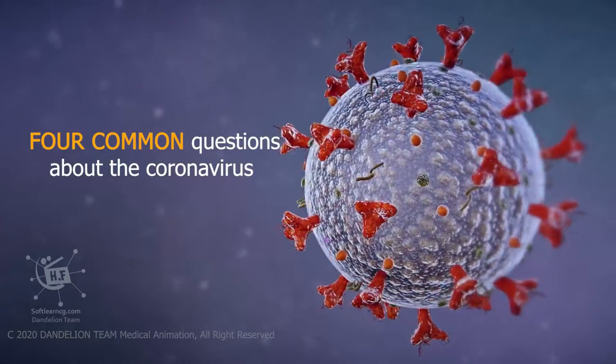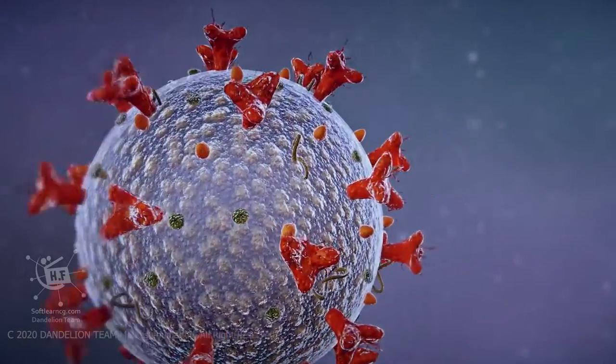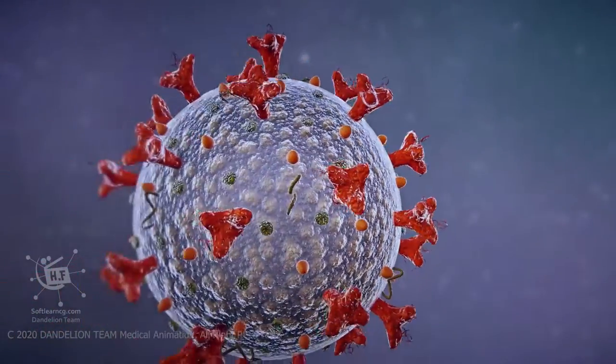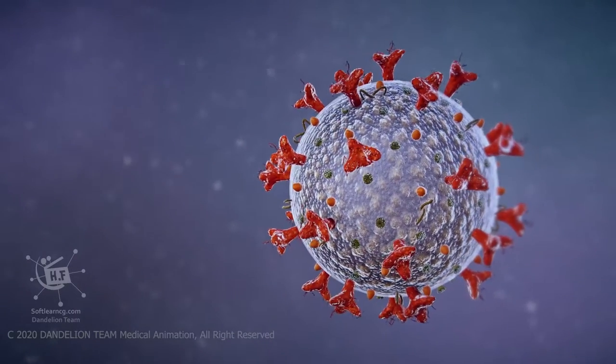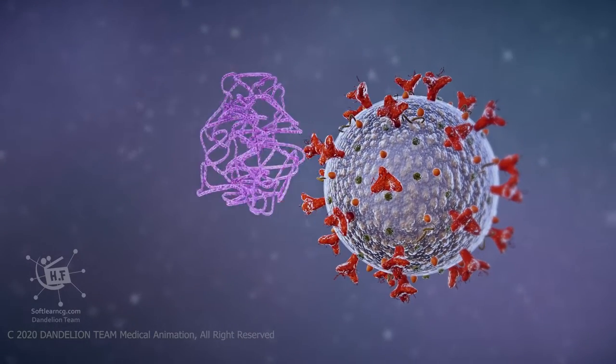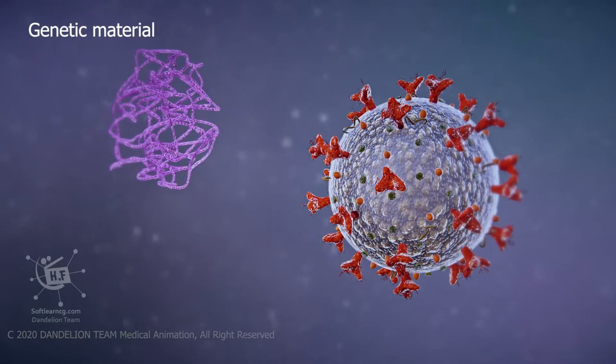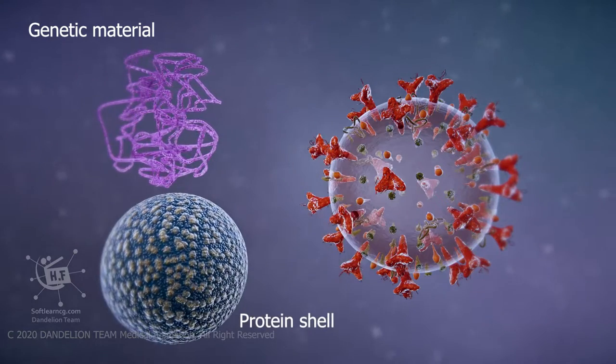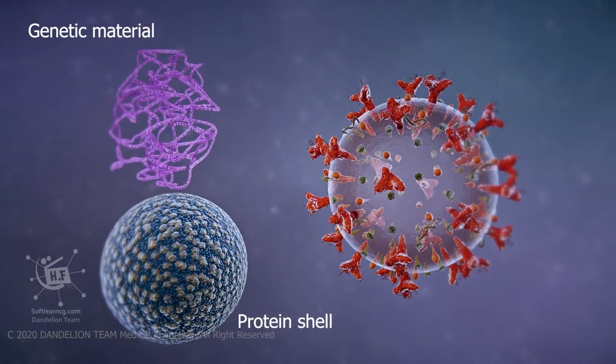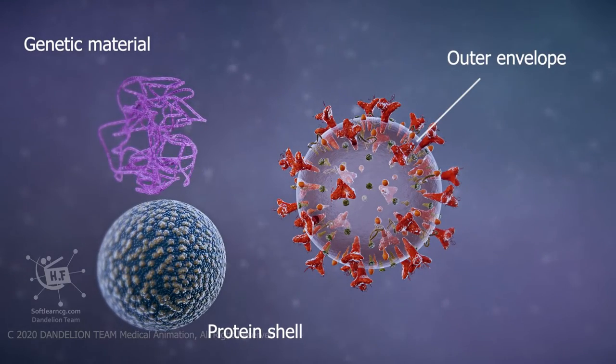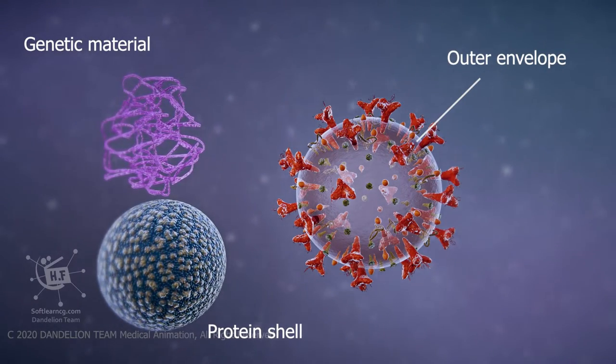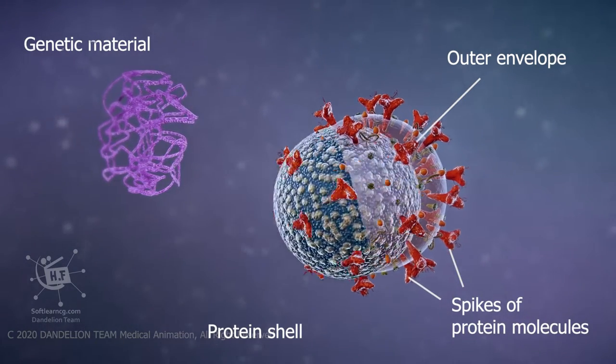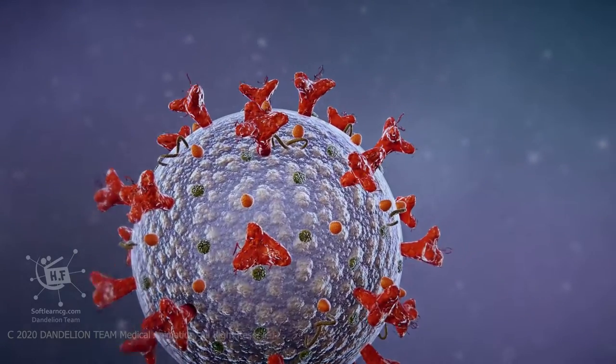Four common questions about the coronavirus. How does coronavirus attack your body? The coronavirus mostly infects living cells in order to reproduce. Inside the virus, genetic material contains the information to make more copies of itself. A protein shell provides hard protection for genetic materials, and the outer envelope allows the virus to infect cells by merging with the cell's outer membrane.